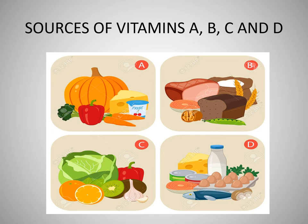Here is a chart showing the different sources of Vitamin A, B, C, and D. For Vitamin A: corn, cheese, carrots, bell pepper, broccoli, and pumpkin. For Vitamin B: bread, peas, meat loaf, and whole grains. For Vitamin C: green leafy vegetables, citrus, kiwi, and bell pepper. For Vitamin D: eggs, fish, milk, and meat are the good sources.